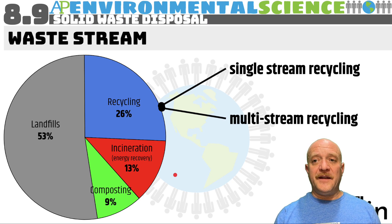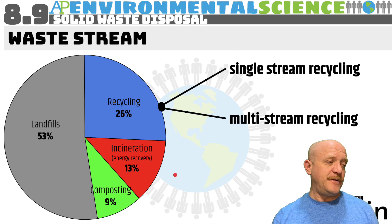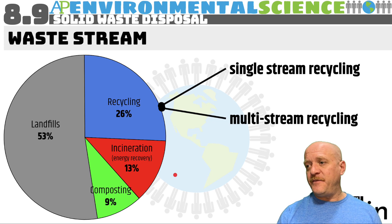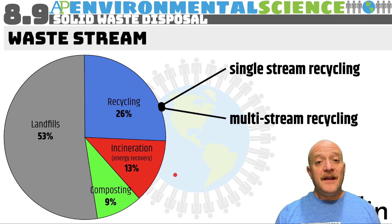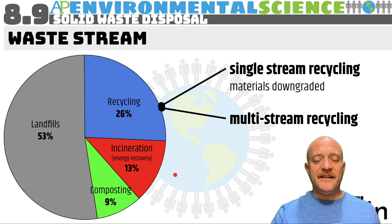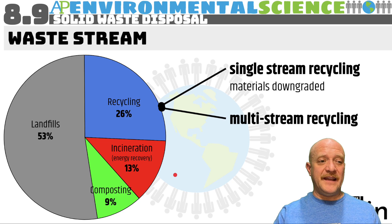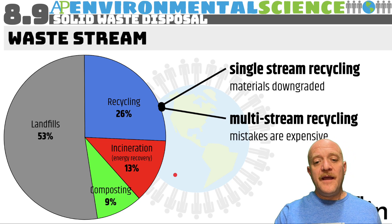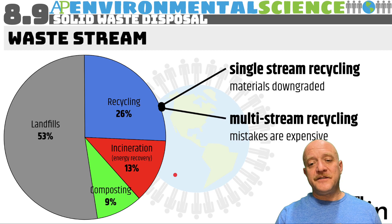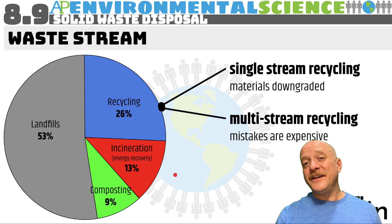If consumers have to separate everything and there's no penalty for just throwing it in the trash, that's what many people do. With single-stream recycling, materials can be downgraded — you may not get as good a quality of plastic or paper. With multi-stream recycling, if there is a sorting mistake, it can be very expensive.